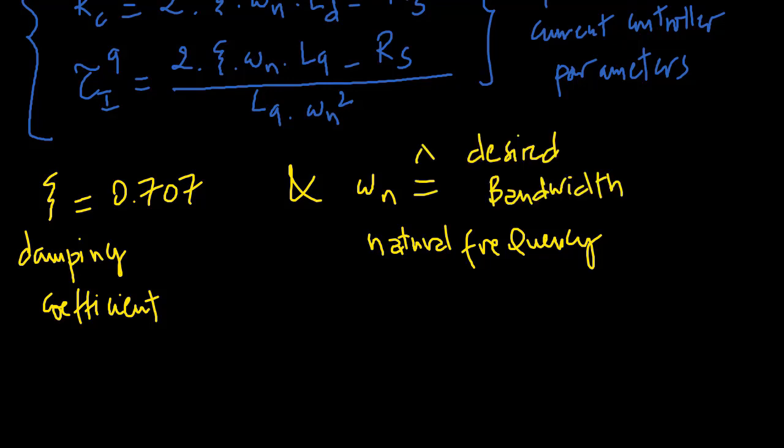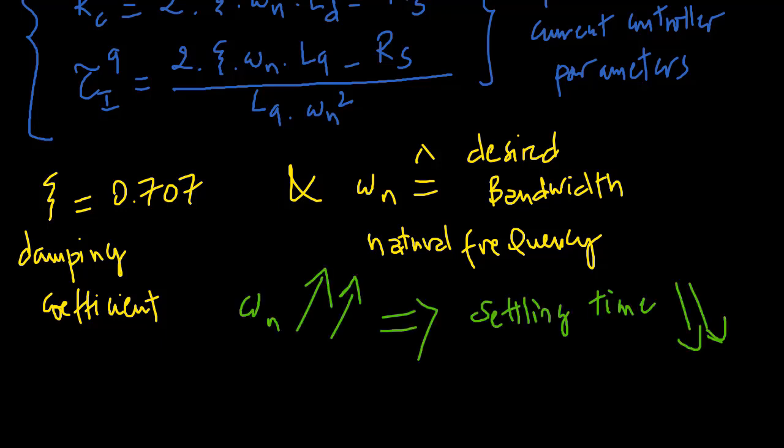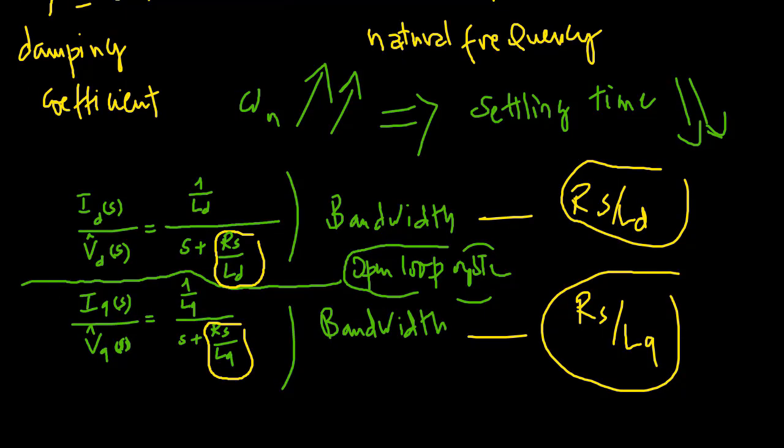The larger omega n is, the shorter the desired closed loop settling time is. It is also useful to choose this parameter relative to the bandwidth of the open loop system.